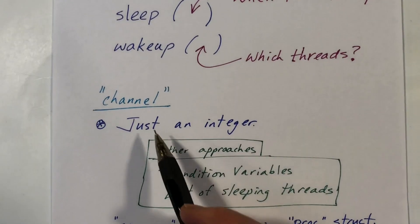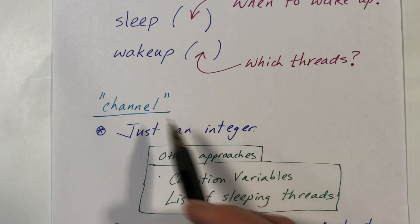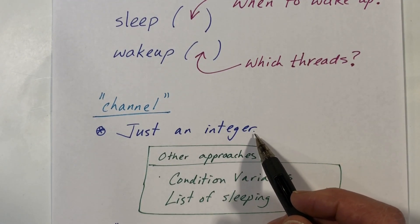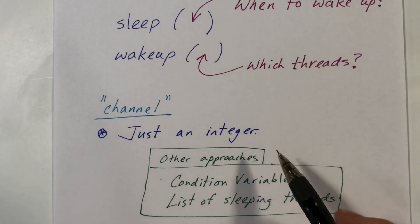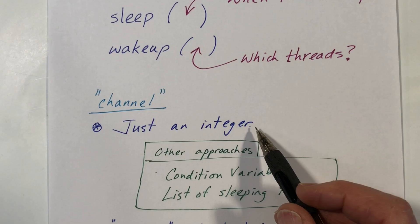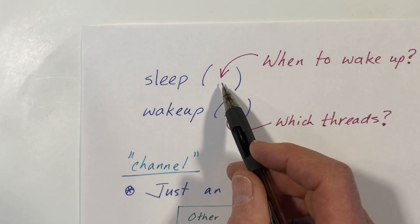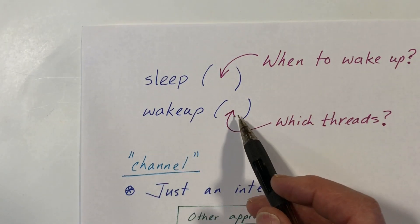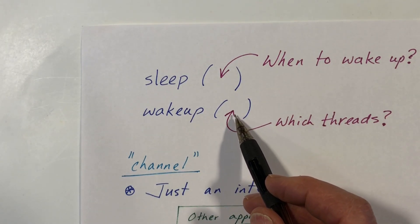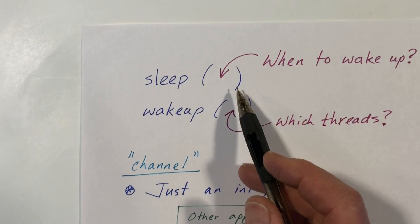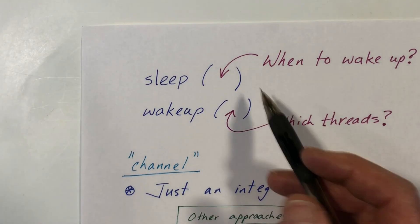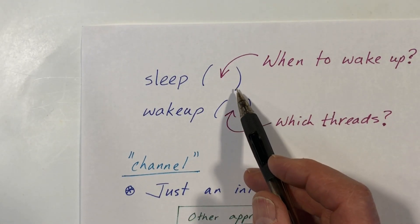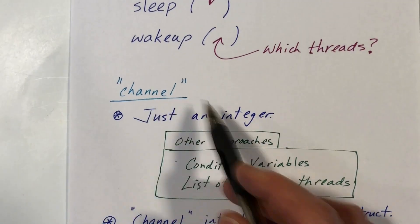With XV6 we have something called a channel. The channel is just a simple number — it could be anything really. It's uninterpreted by the sleep and wakeup functions. For example, it might be the number 37. A process could sleep on the number 37, and then when wakeup is called with 37, it will wake up that process. But if wakeup is called with some other number like 54, it will only wake up the processes that are sleeping on 54. That's how the channel works.